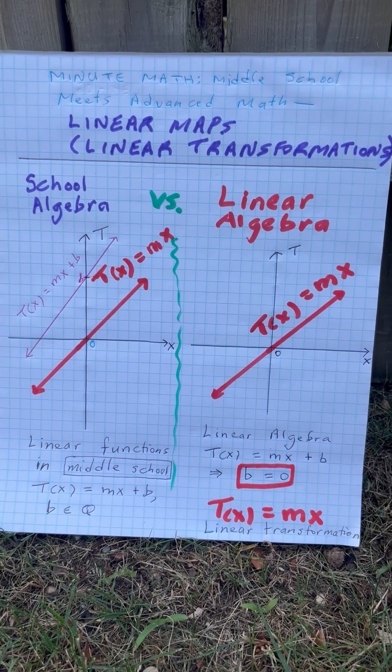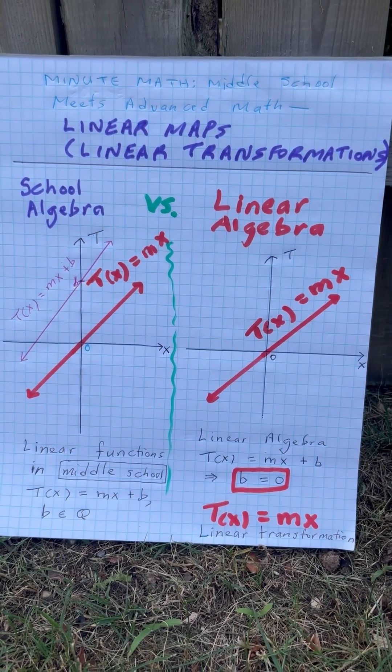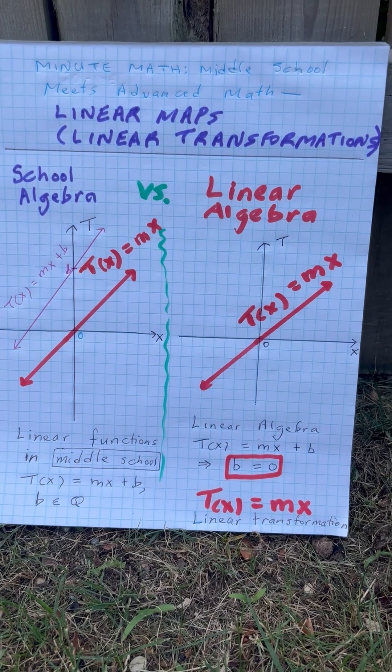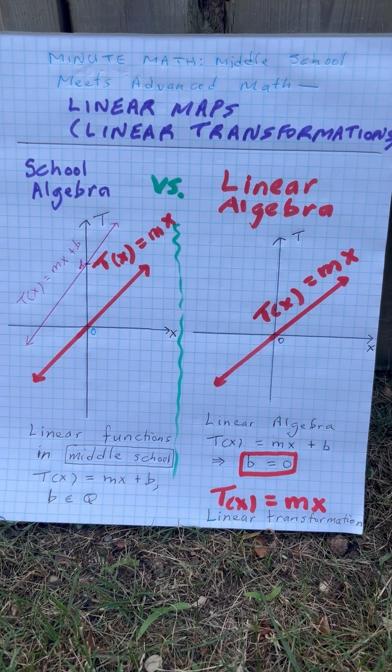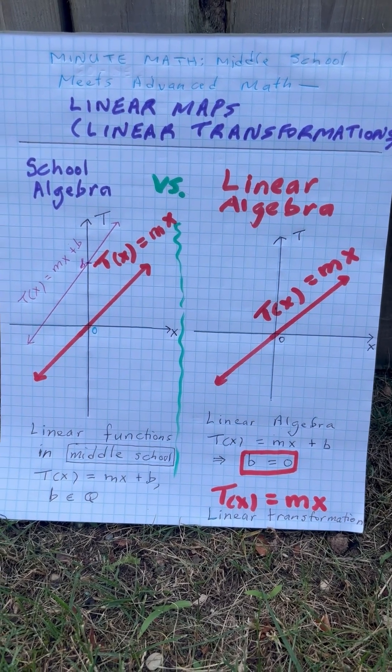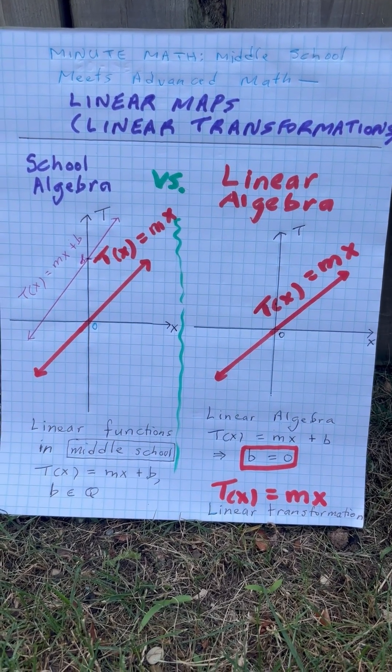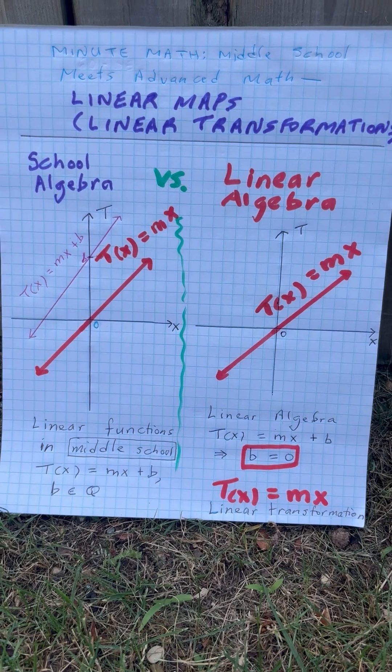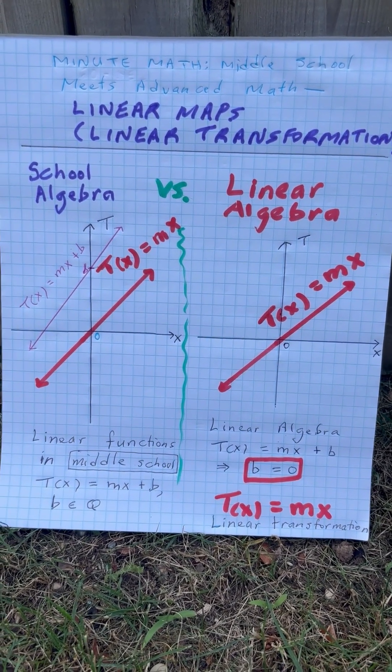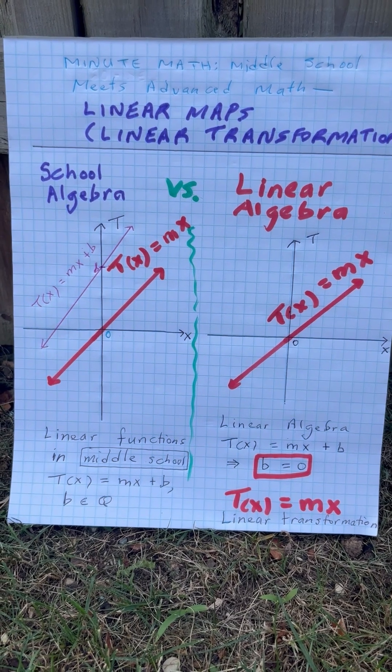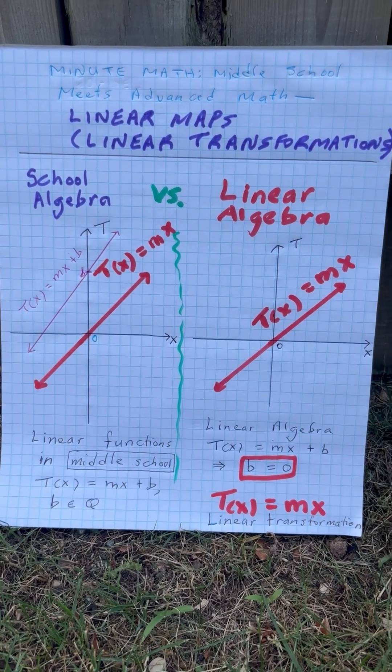On the other hand, in linear algebra, for something to be linear—we say a linear transformation or a linear map—we must have that the b in this situation, if we're going from R to R, T(x) equals mx plus b would be a linear transformation only when b is equal to zero. So that's the big difference here.